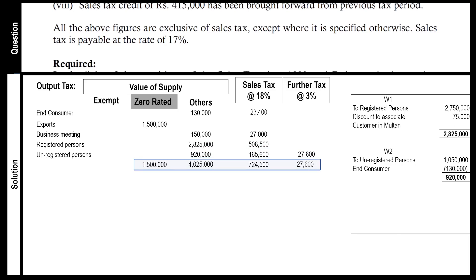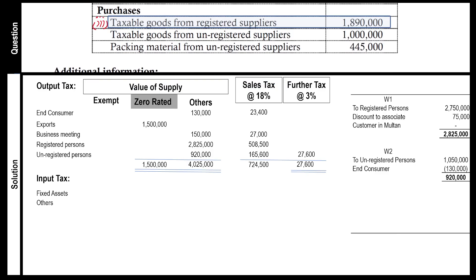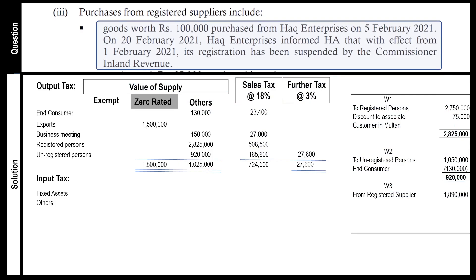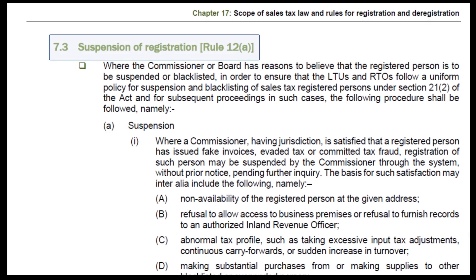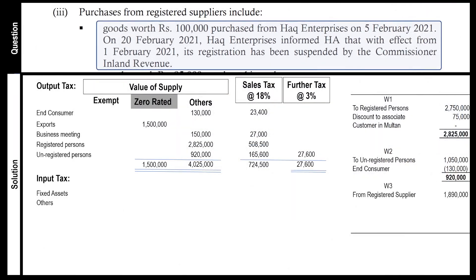Now we come to input tax calculation — this is sales tax on fixed assets and other purchases. Start collecting information from the table. Purchase from a registered supplier is rupees 1.89 million — mention it in a separate working because it has some additional information. Para 3 of additional information tells us about a purchase whose supplier had a problem maintaining his registration and the commissioner has suspended his registration. Recall the study text on suspension of registration: if registration of a supplier is suspended, the buyer cannot claim input tax on purchases made from such supplier. Therefore, deduct rupees 100,000 from the purchases figure.